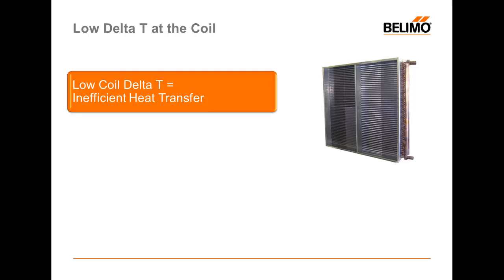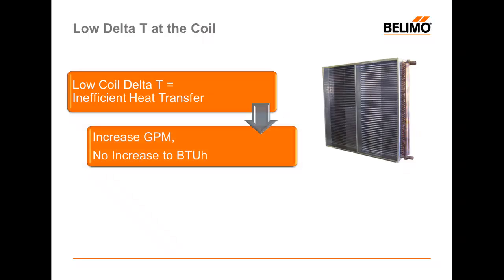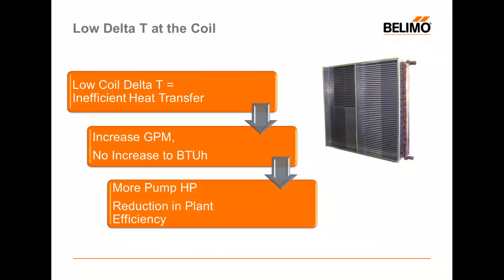Low Delta-T is inefficient for several reasons. Since we're not making the water any warmer, it means we haven't transferred that heat into the space. In order to achieve this type of low Delta-T, it means we have to increase our GPM — we're flowing water faster and not increasing any BTU output. When we do this, we obviously incur more pumping costs from pumping more water, and we reduce our overall plant efficiency.